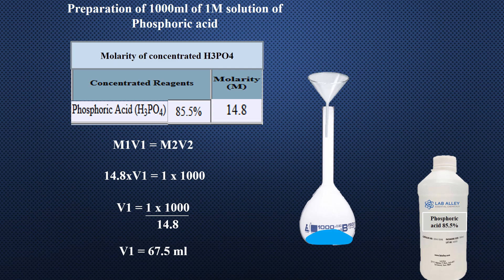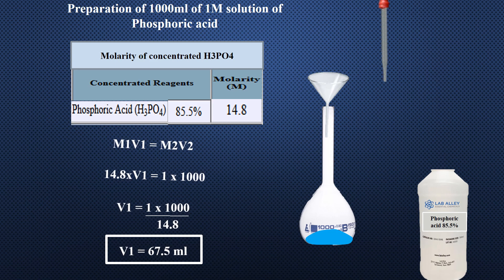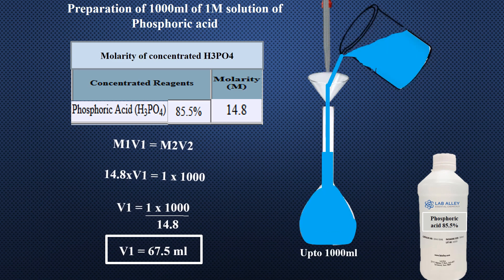To prepare 1000 milliliters of 1 molar solution of phosphoric acid: M1 will be the same as in the previous calculations. V1 is to be found out. M2 will be 1, as we want to prepare a 1 molar solution. Put 1000 in V2, as we want to prepare 1000 milliliters of solution. Take 67.5 milliliters of concentrated phosphoric acid with a pipette into a 1000 mL flask having a little water in it, and dilute the solution up to the mark. This gives 1000 milliliters of 1 molar solution of phosphoric acid.